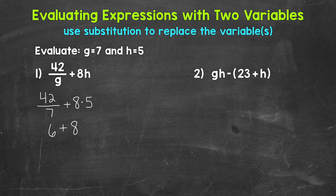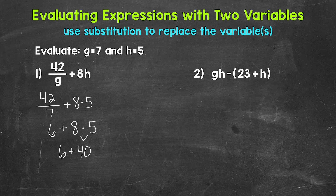Bring down everything we did not use: the addition sign, the 8, the multiplication sign, and the 5. Now we have addition and multiplication. Multiplication comes before addition, so let's multiply next: 8 times 5 equals 40. Bring down the addition sign and the 6, and we end with addition: 6 plus 40 equals 46. So the value of this expression is 46 when g equals 7 and h equals 5.